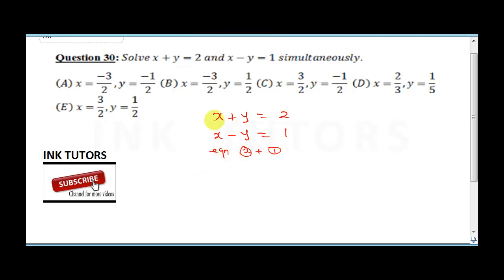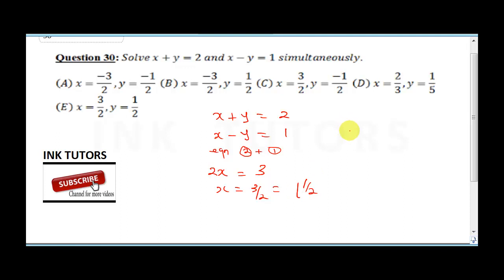Adding the two equations: x plus x gives 2x, y plus minus y gives 0, and 2 plus 1 gives 3. So 2x equals 3, therefore x equals 3 over 2, which is 1 and a half. Now let's find y.